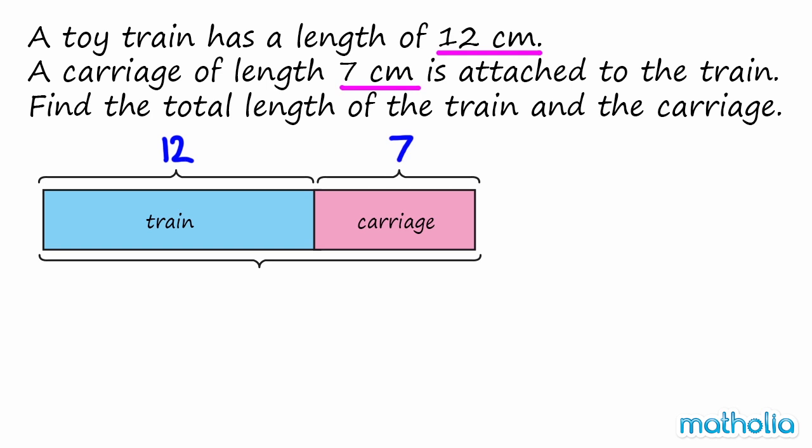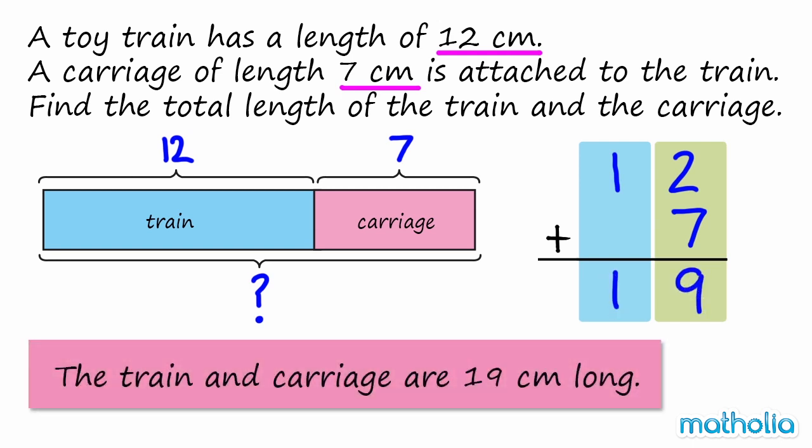We need to find the total length of the train and the carriage. To find the total length we must add. 12 cm plus 7 cm equals 19 cm. So the train and carriage are 19 cm long.